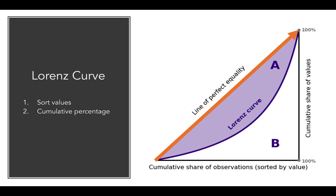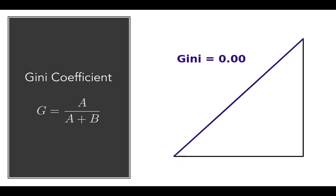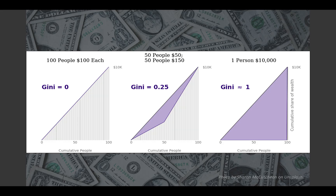The Gini coefficient basically measures how much our data deviates from perfect equality. You calculate it by taking the shaded area and dividing it by the area A plus B. As the Lorenz Curve pulls away from the line of perfect equality, the Gini value will get larger and larger. If we are on the line of perfect equality, we'll have a value of 0. If we eventually reach perfect inequity, the Gini value should be very close to 1. So in the original three examples, the situation where everybody has $100 each gives a Gini value of 0, but the situation where one person has $10,000 and 99 people have nothing gives a value very close to 1.